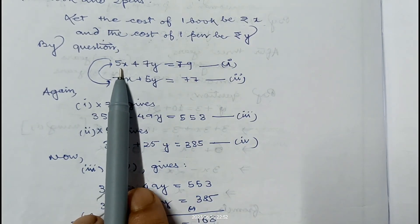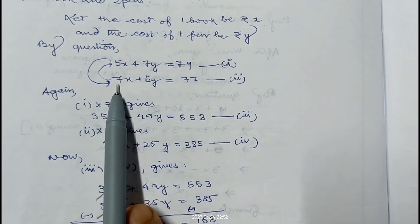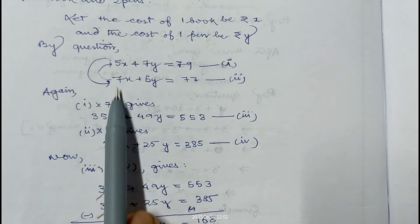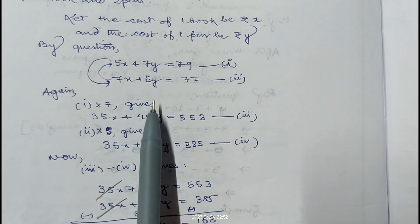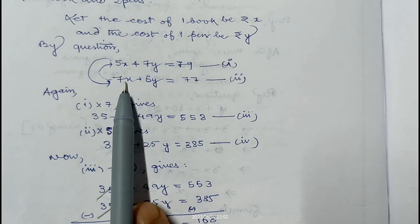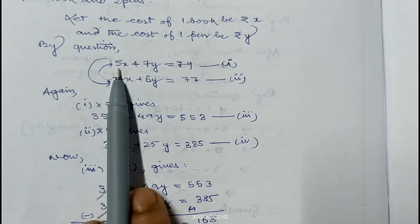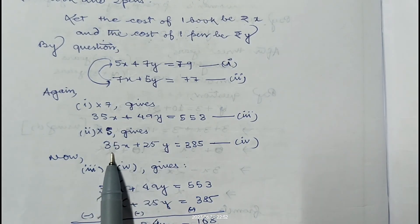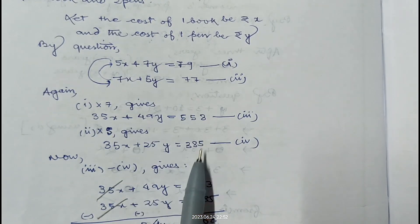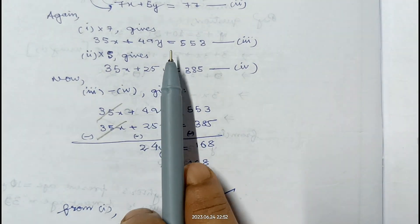Now we are going to apply the elimination method. We multiply equation 1 by the coefficient of x in equation 2, which is 7: giving 35x plus 49y equals 553. We multiply equation 2 by the coefficient of x in equation 1, which is 5: giving 35x plus 25y equals 385. Now we subtract equation 4 from equation 3.